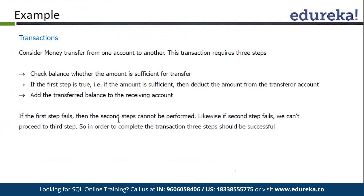For example, we have to transfer money from one account to another. In that case, first of all we are going to check if the amount is sufficient in our account or not. If it is fine, we are going to deduct the amount and transfer it to the next account. This is a process, a cycle. This cycle is done in a transaction so that if anything unexpected occurs, we can roll back.